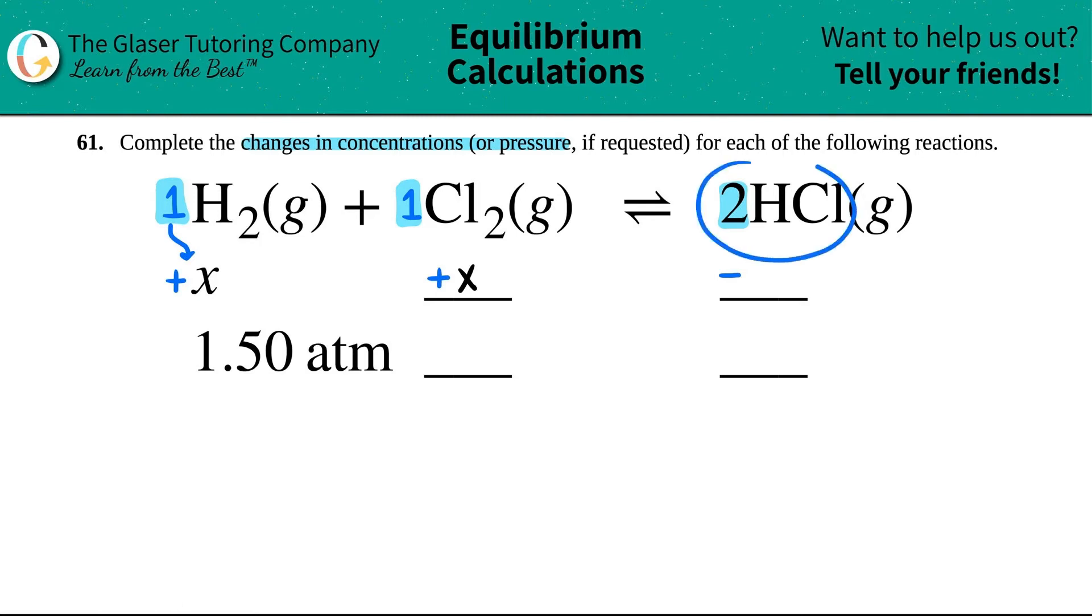Now for this one, for the 2 HCl, there's a two here. So I have to keep that there. So this is going to be minus 2X.